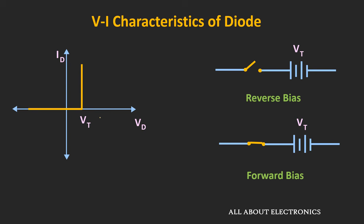In this first approximation, we have also assumed that the diode has zero resistance. This is visible from the VI characteristic — once the applied voltage crosses the threshold voltage, the voltage across the diode remains constant while only the current increases, meaning the diode offers zero resistance. But in actuality, every device has some finite resistance which limits the current flowing through it.